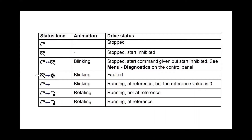The curved arrow with a line through it blinking between an X means that the drive is in fault. A curved arrow that is blinking means it is running at reference but the reference is at zero. A dotted curved arrow blinking between a dotted rotating arrow means the drive is running but hasn't reached the reference yet. Once it reaches the reference, the arrow will turn solid again and keep rotating.